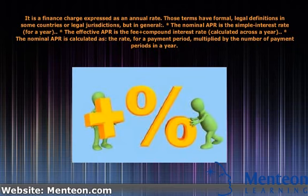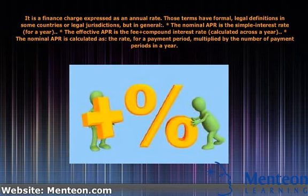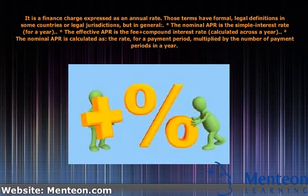The nominal APR is calculated as the rate for a payment period, multiplied by the number of payment periods in a year.